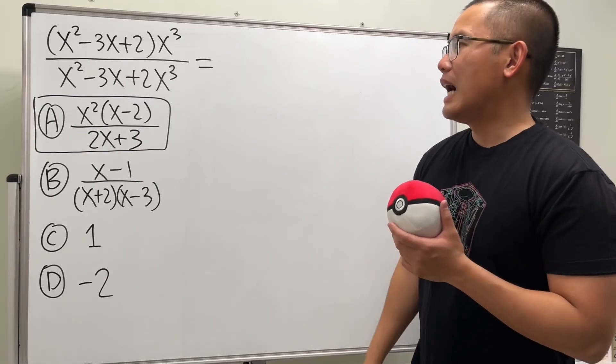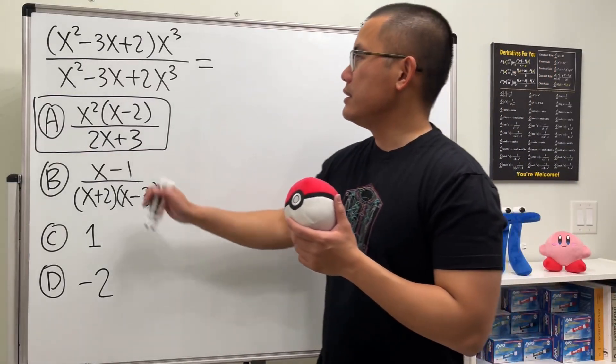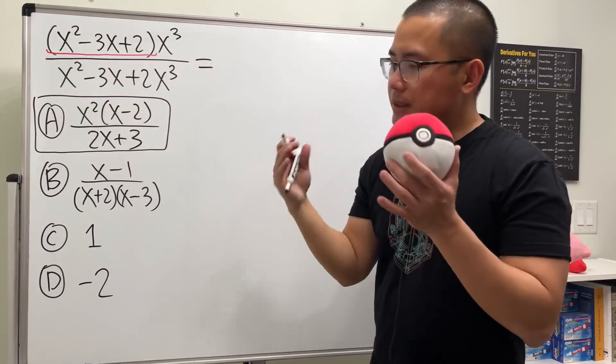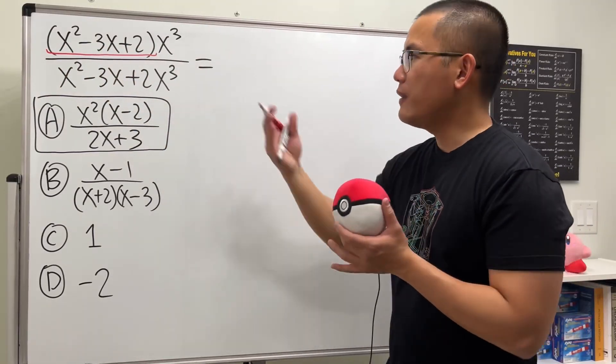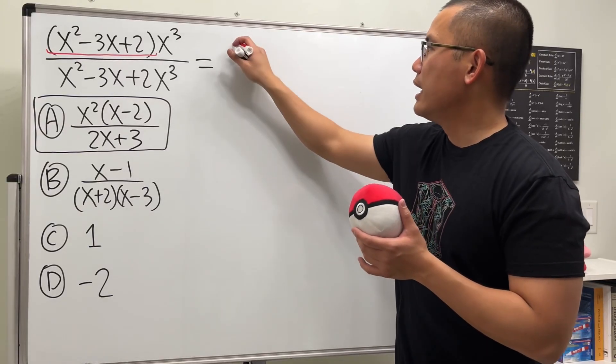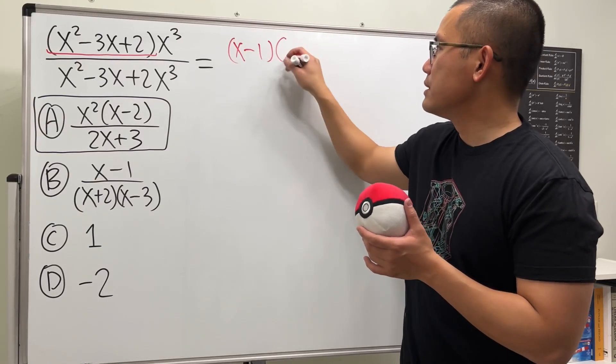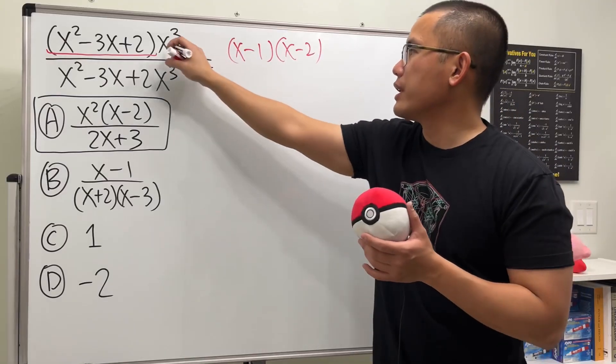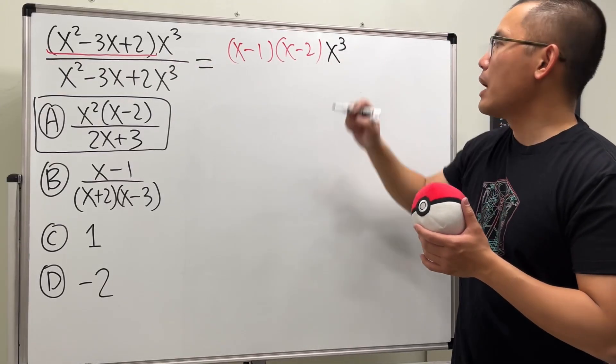Now let's see how we can do this. Firstly, because we have this parentheses, that's a quantity and we can actually factor that. This is just a trinomial and we will just get (x-1)(x-2), and then right here we still have that x to the third power.